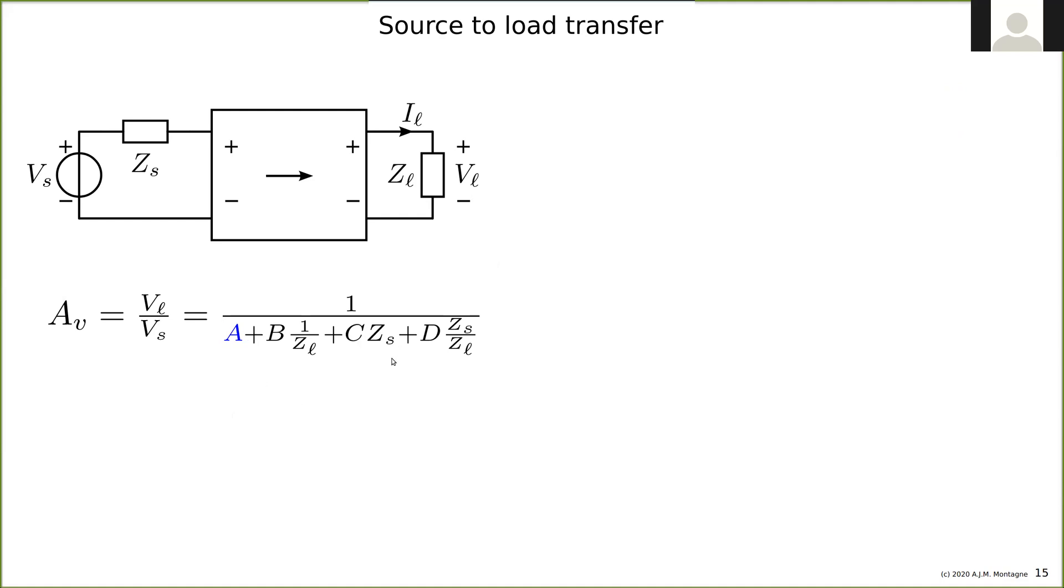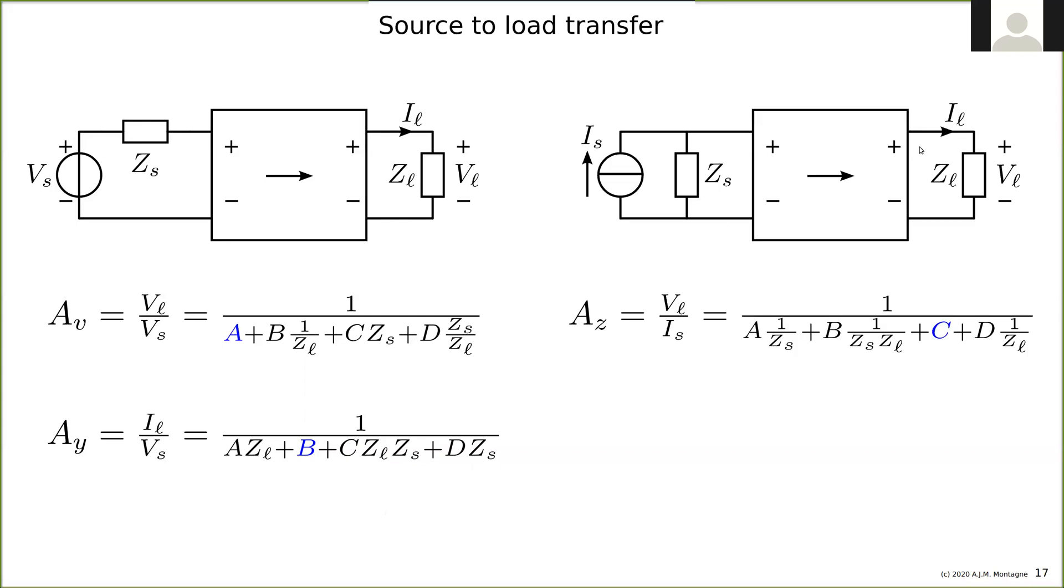You can look at the other ones. For example, the voltage to current transfer: A, C, and D must be zero and B must have a well-defined non-zero value. Similarly for the trans-impedance, we need to fix C to an accurate value and keep A, B, and D zero. For the current amplifier, we want to fix D.